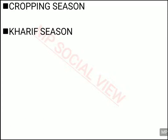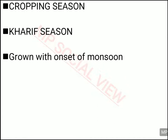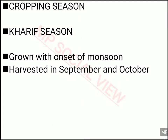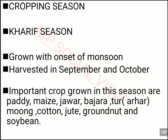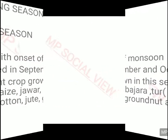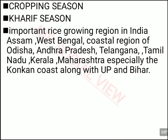The second season in India is the Kharif season. The Kharif season starts soon after the monsoon — farmers start sowing plants soon after monsoon begins — and they harvest their crops in September and October. In this season they grow paddy, maize, jowar, bajra, tur (arhar), moong, cotton, jute, groundnut and soya bean. All these crops are grown in the Kharif season.